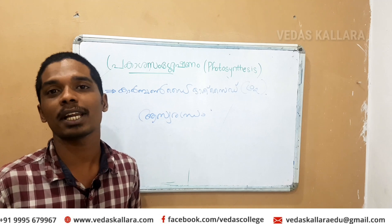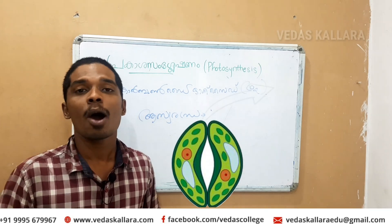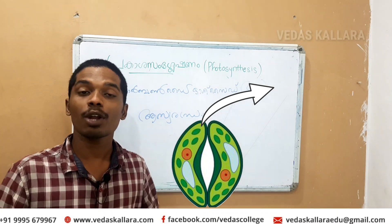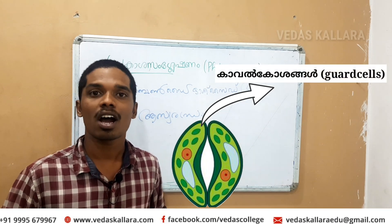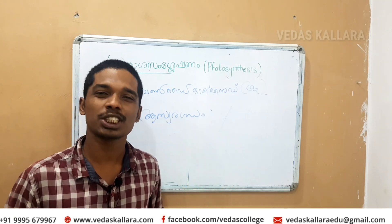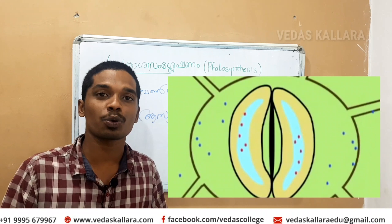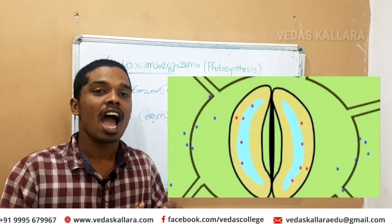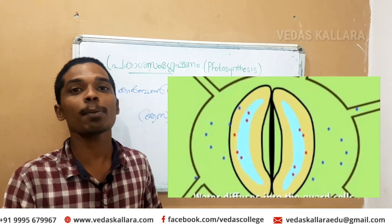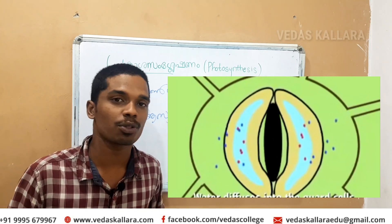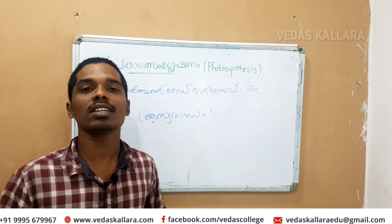Let's talk about Asirandran. That is called Asirandran, and as the source, two things exist in the source — it is named Guard Cells. To close it and open it, this is called Asirandran, and through which the gas exchange is created.